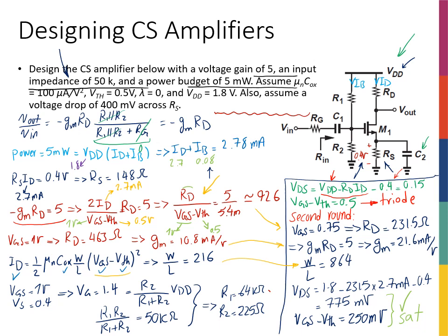The last step is updating R1 and R2 for the new VGS. The new gate voltage is VG = VS + VGS = 0.4 + 0.75 = 1.15 V. So R2/(R1+R2) × 1.8 = 1.15, with R1∥R2 = 50 kΩ still required. This gives new values for R1 and R2 — that calculation is left as an exercise.